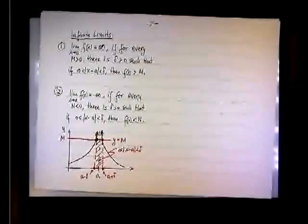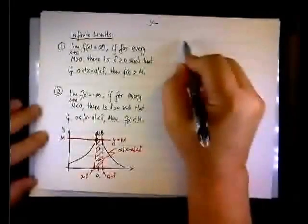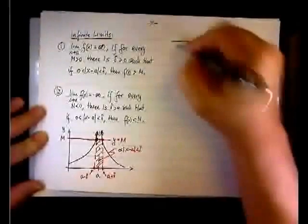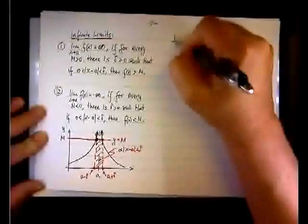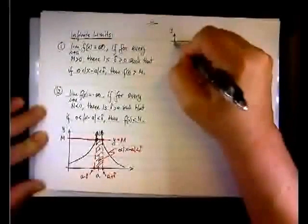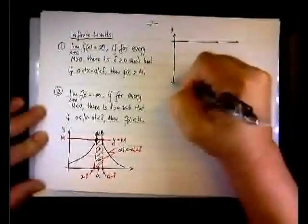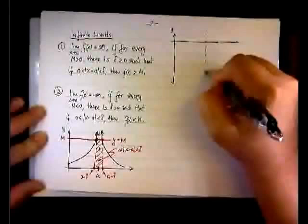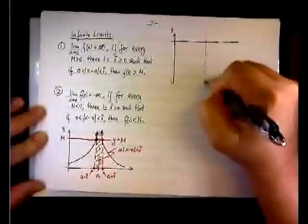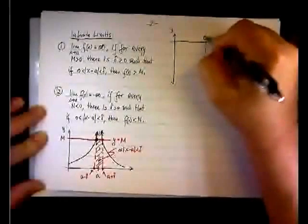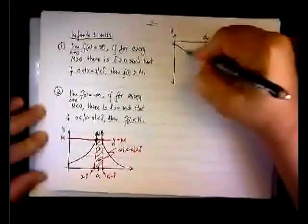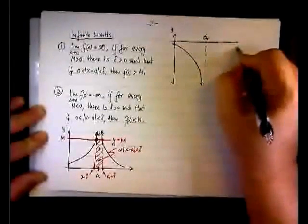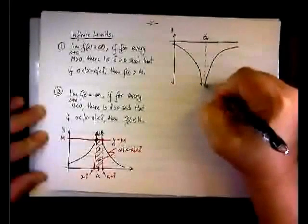Likewise, for the second part, it's the mirror image pointing downward. Again, x positive is over there, but we are going to look down. So this is our asymptote. Again, a is right there, and we have one side approaching negative infinity like so, the other side from here.